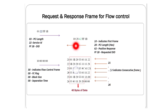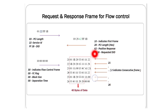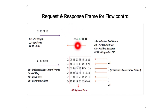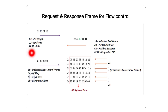Because we received those first two bytes — 10 indicating first frame, and 28 indicating a PCI length of 40 bytes — as the tester we must now send a flow control frame. The value 10 is constant to indicate first frame, followed by the data length in hex. The 40-byte value is not fixed; it depends on the DID. For example, it could be 41 bytes for a different identifier.